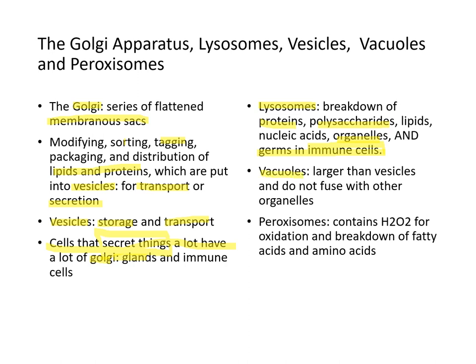Vacuoles are larger than small vesicles and do not fuse with other organelles; they are simply large sacs that contain material. Peroxisomes contain hydrogen peroxide (H₂O₂) for oxidizing and breaking down fatty acids and amino acids.